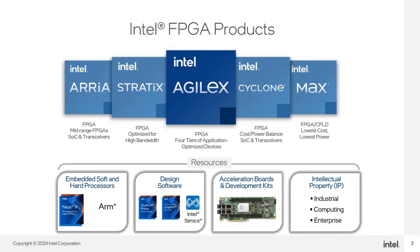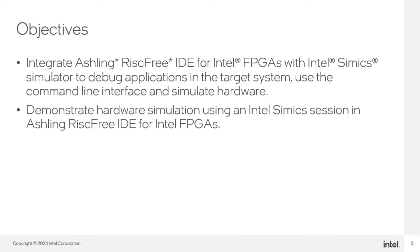Intel FPGAs are available in five current families: Max, Cyclone, Arria, Stratix, and the newest family Agilex, all with increasing capacity, performance, and feature sets. The objectives for this e-learning are to integrate Ashling RISC-V IDE for Intel FPGAs with Intel Simix Simulator to debug applications in the target system, use the command line interface, and simulate hardware.